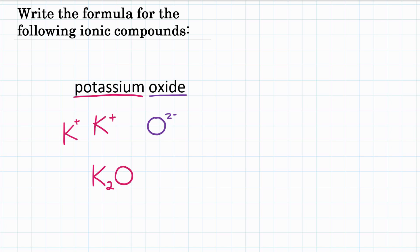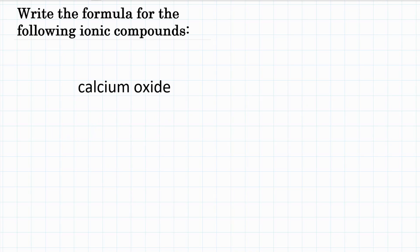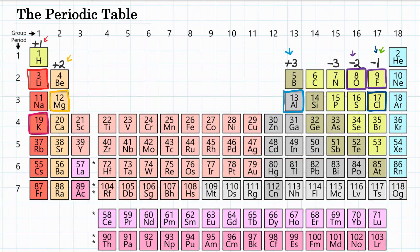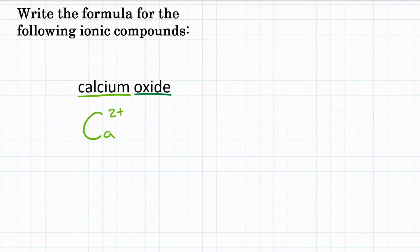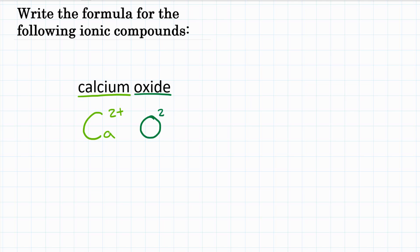Our last example: calcium oxide. Calcium is in the second group and becomes positive two. Oxygen is in group 16 and becomes negative two. Calcium is two positive and oxygen is two negative — one of each cancels out, so we only need one of each. The formula is CaO.